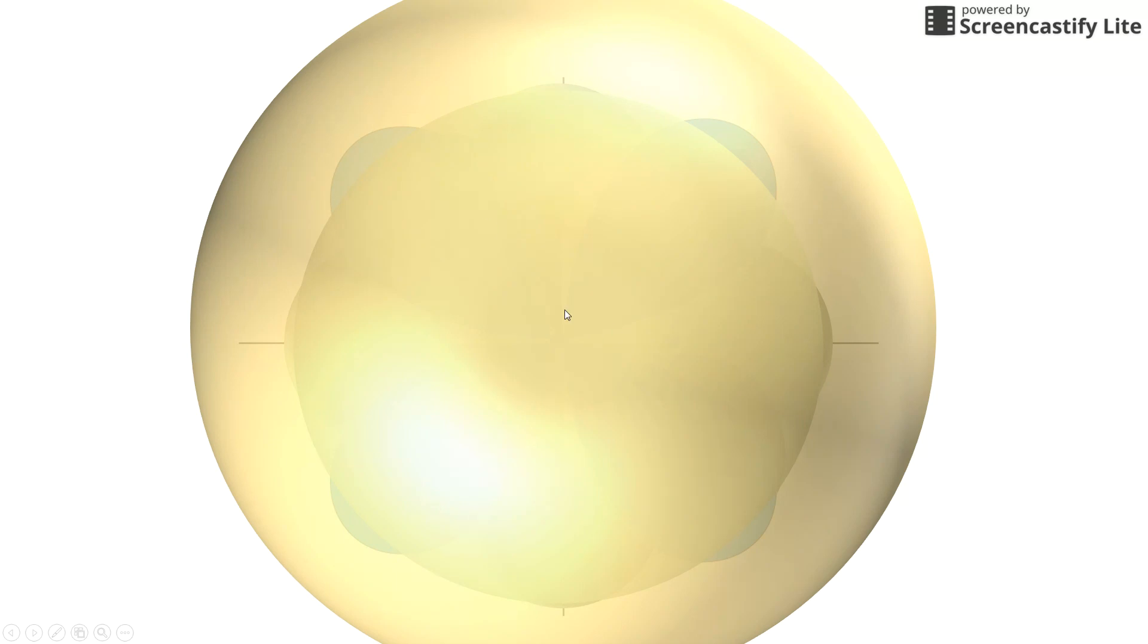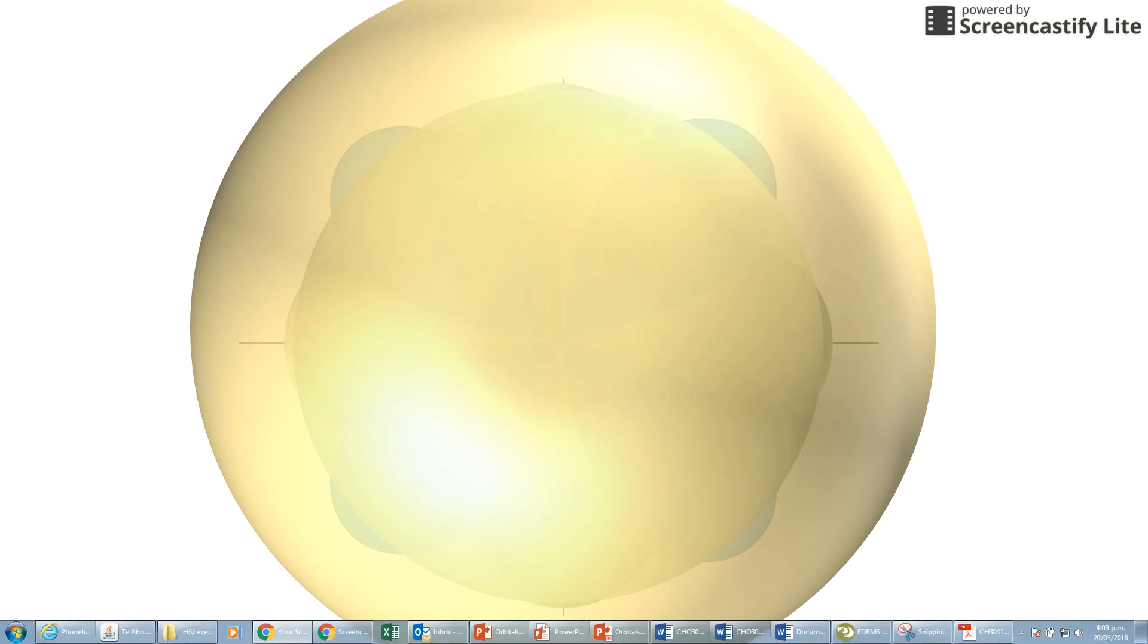I hope this has helped your understanding of visualizing where the electrons are, what they are doing, what sort of energy they have, and the relationship between the orbital and the energy level. Goodbye.